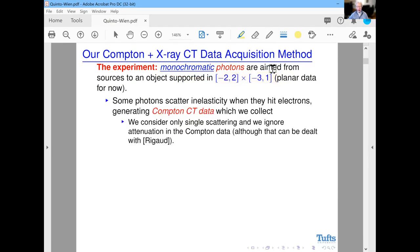Some photons scatter inelastically when they hit electrons, and this generates Compton CT data which we're going to collect. And we collect only single scattering. We're not going to assume multiple scattering, and one can show, I think Gail Rigaud has demonstrated that single scattering is important. We're going to ignore attenuation in the Compton data, although you can include it by including the weight in the integral that defines the path of the photon.